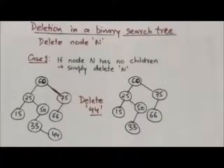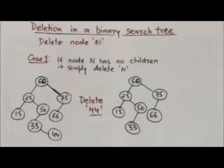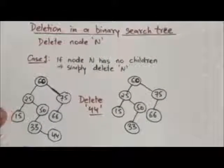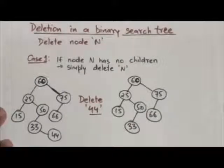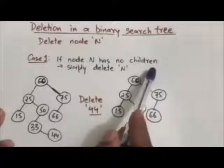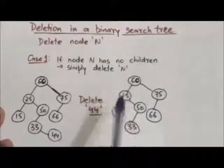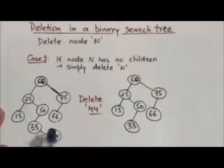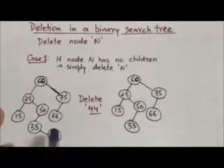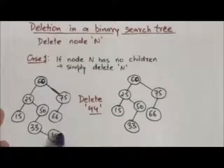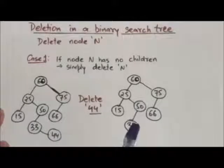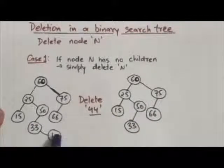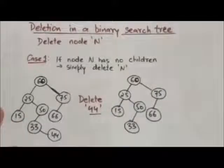Now, how can we delete a node from a binary search tree? Suppose we have to delete a node N from a binary search tree. There are three cases. First case: if node N has no children, then we simply delete node N. For example, if we delete the node with value 44, which has no child, we simply remove it, and we get the resulting binary search tree.